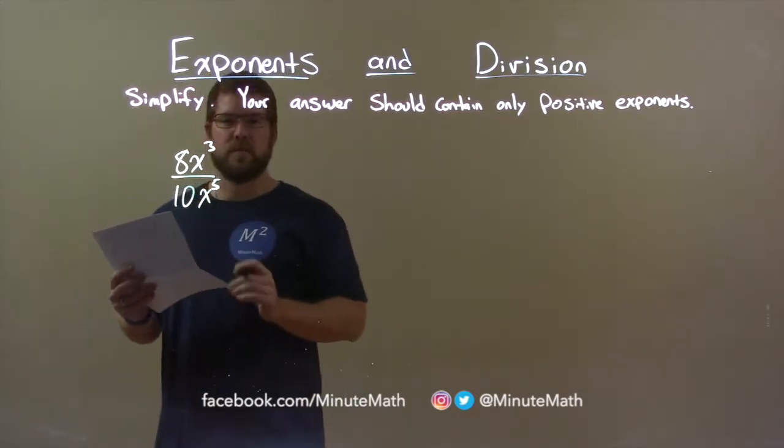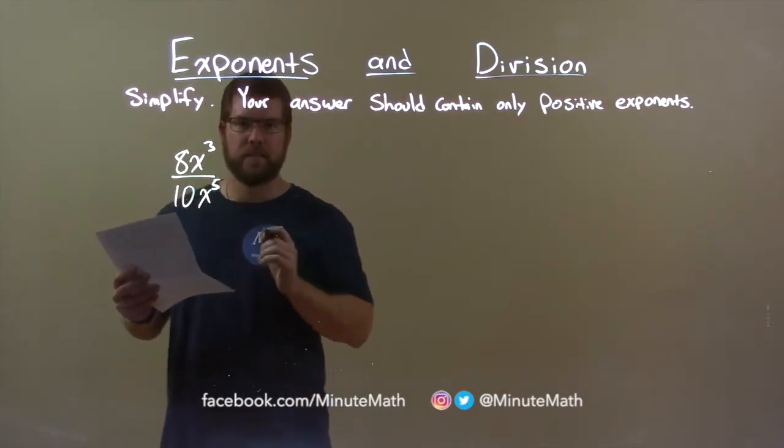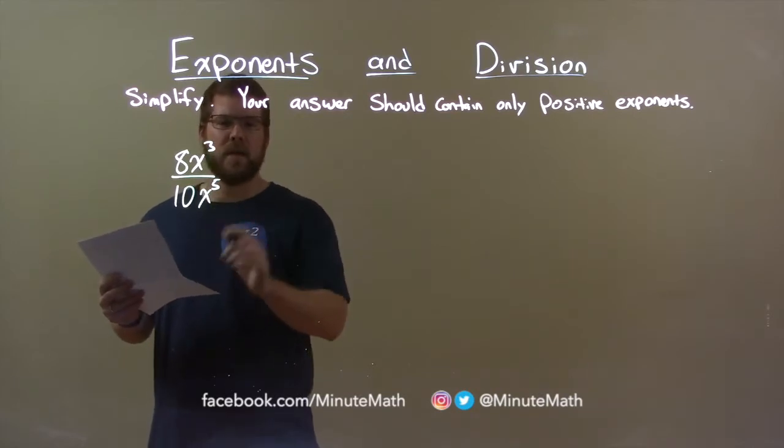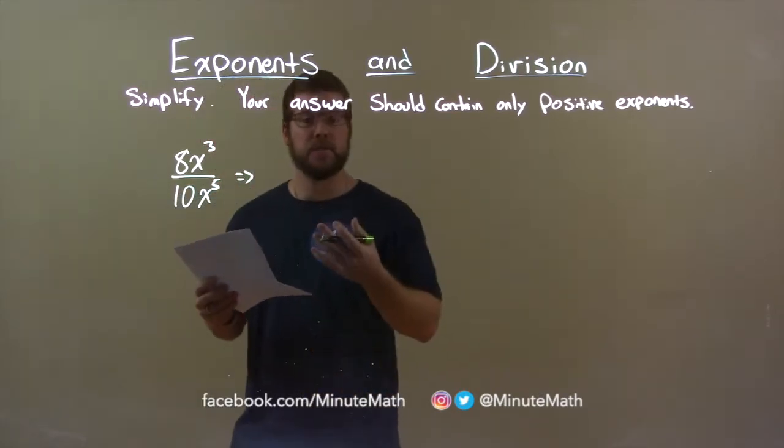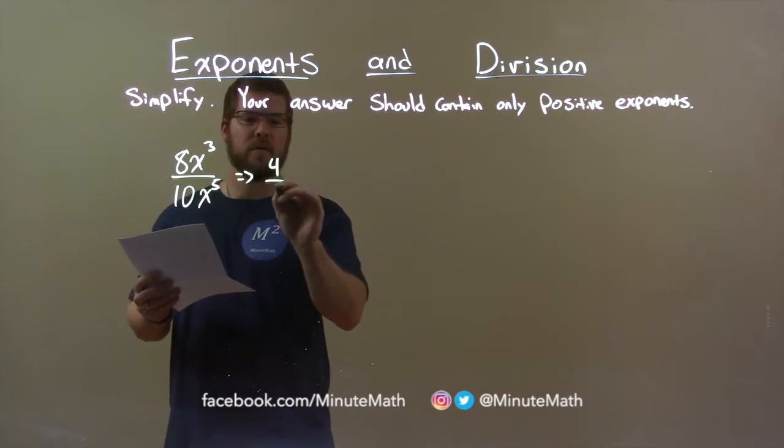Let's look at the coefficients here. 8 over 10, okay? Well, 8 over 10, we can simplify that. Both are divisible by 2, and that becomes 4 fifths.